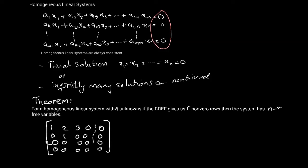If you see this example here, there are four unknowns, n is equal to four in this case, and the number of, it says here, gives us r non-zero rows. There are two, these two are non-zero, so r is equal to two, so there will be two free variables.